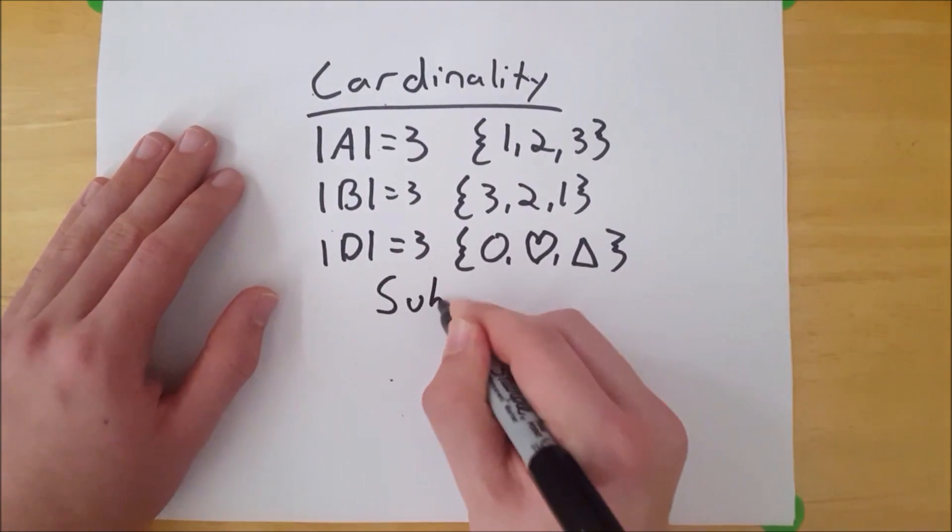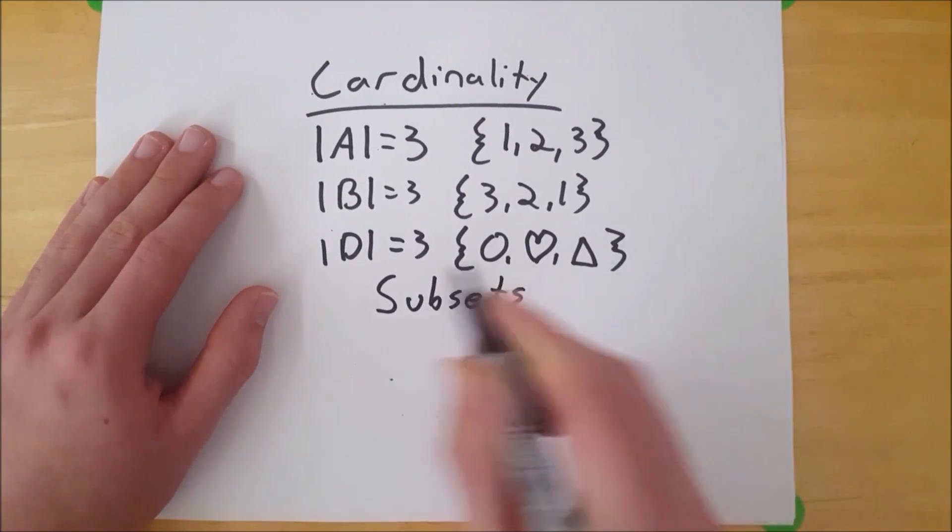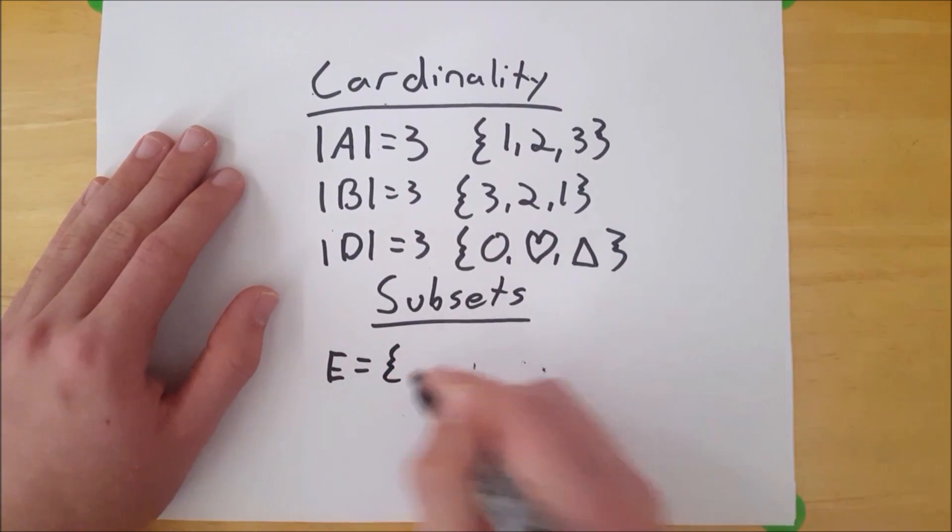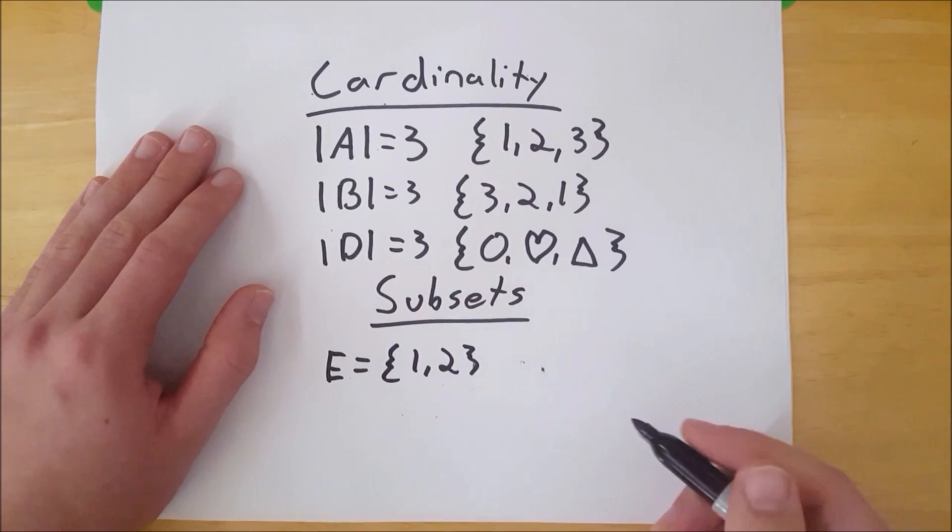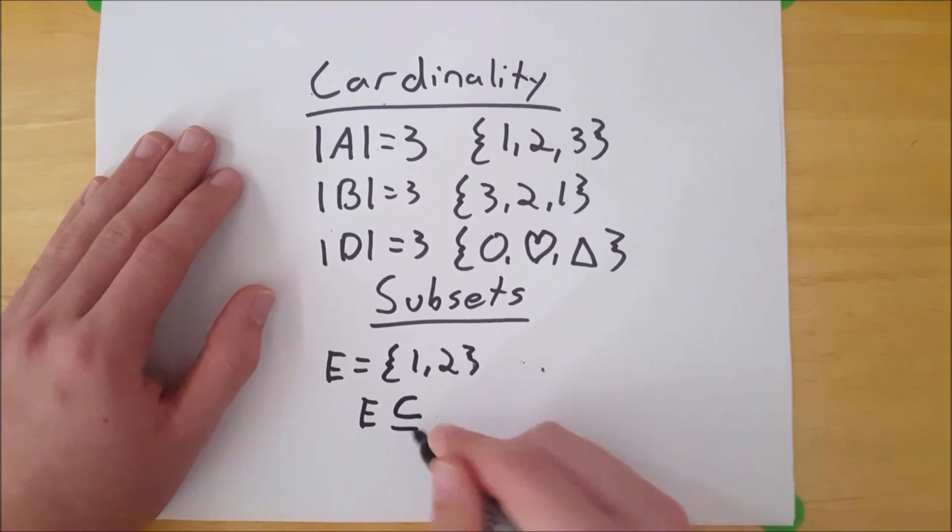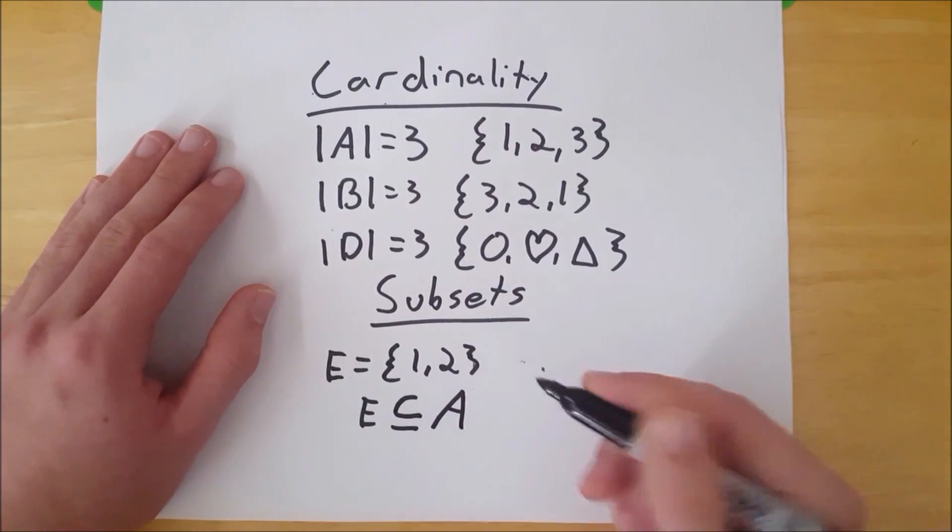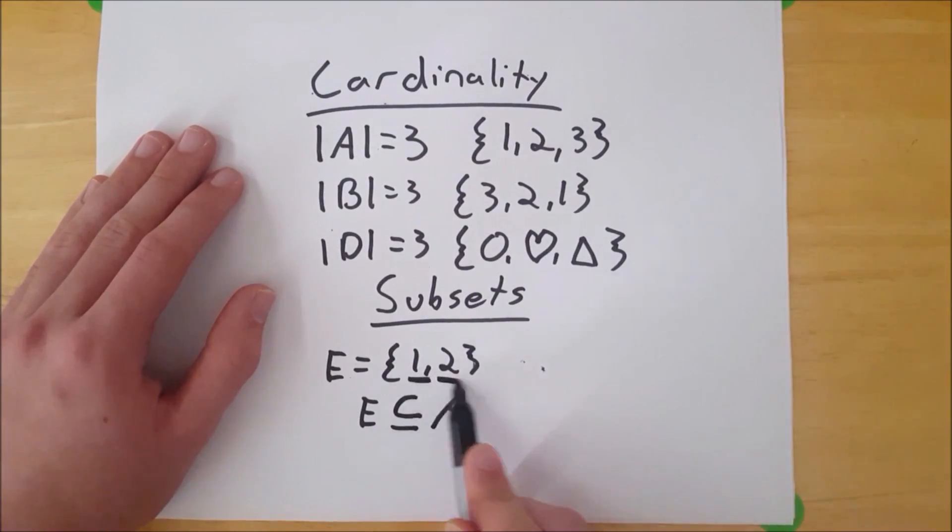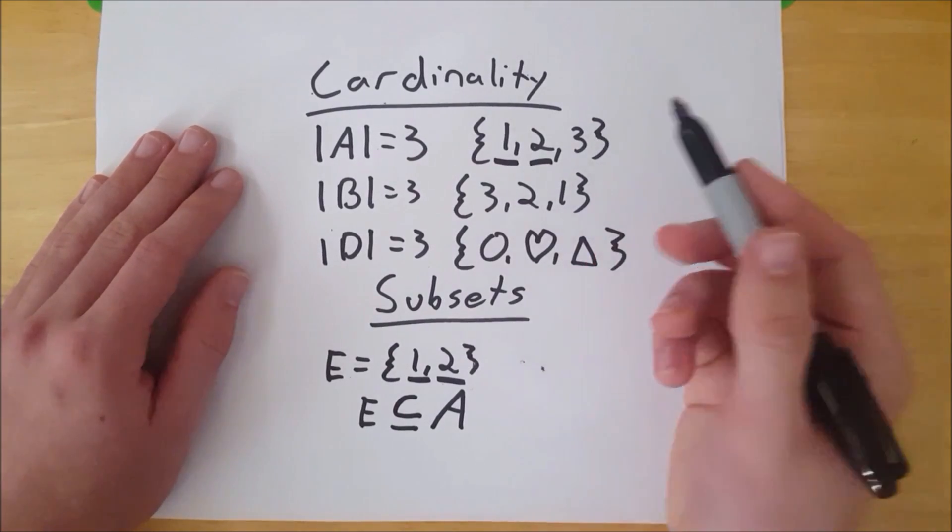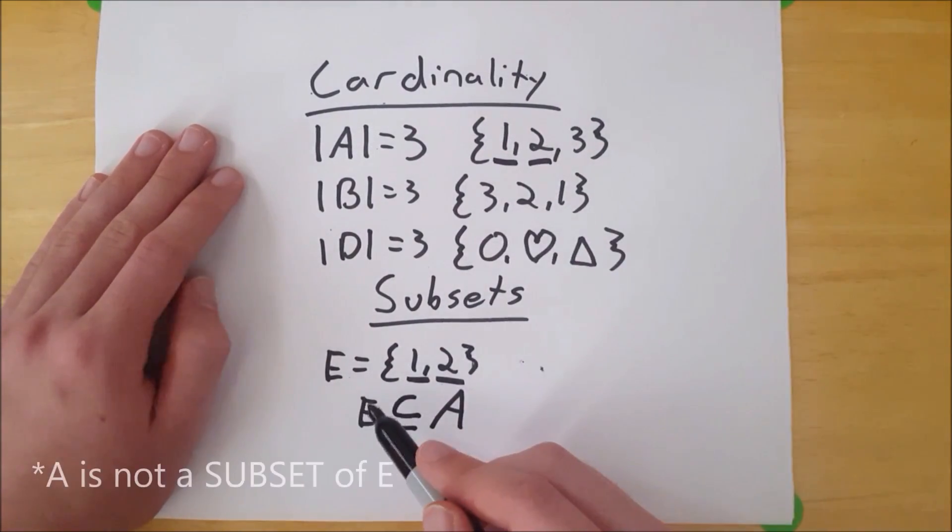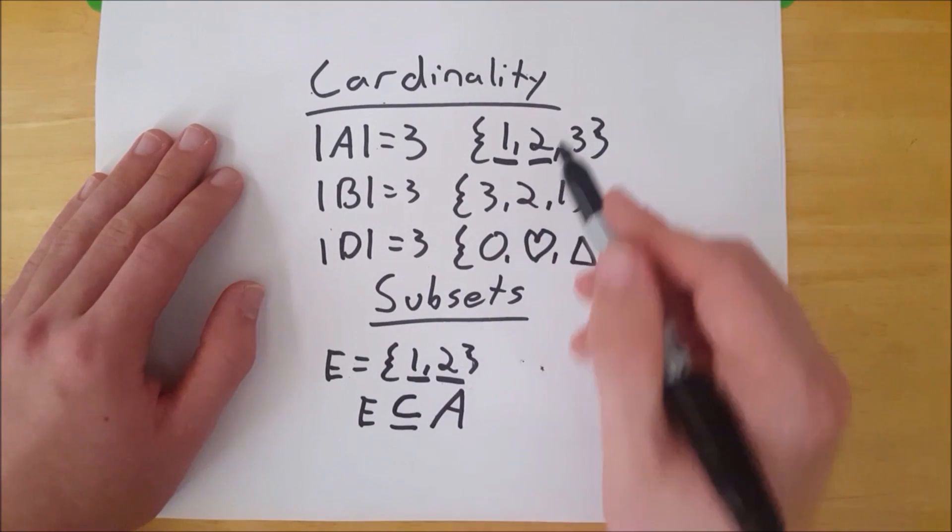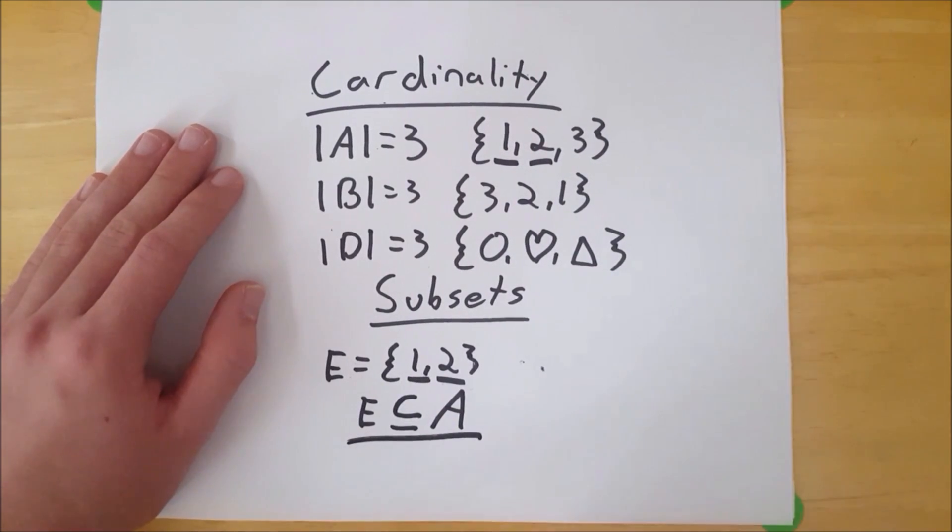The last thing we're going to talk about is subsets. So suppose we have another set, and we're going to call this set E, and E is equal to the set one, two. We can say that E is a subset of A with this symbol here, a C with a line under it, and that means that all of the elements in E, one and two, are also in A. Now A does have three, which E doesn't have, and that means that A is not an element of E, because all of the elements in A are not in E. But all of the elements in E are in A, so E is a subset of A.